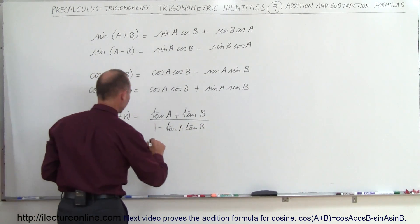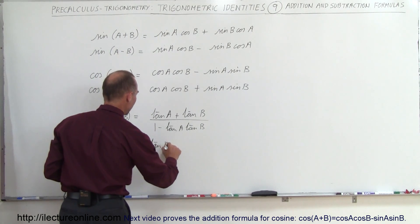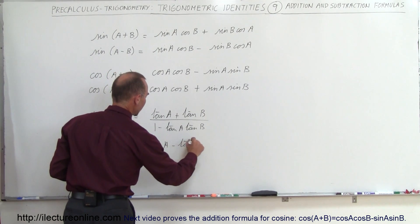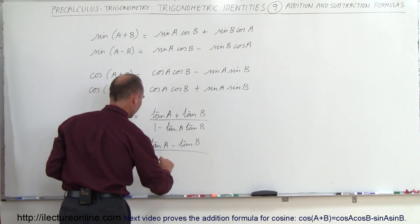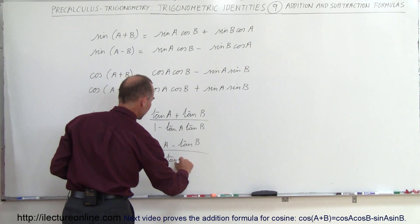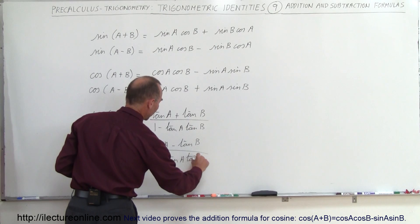And the tangent of A minus B is equal to tangent A minus tangent B divided by, and here the sign changes, 1 plus tangent A times tangent B.